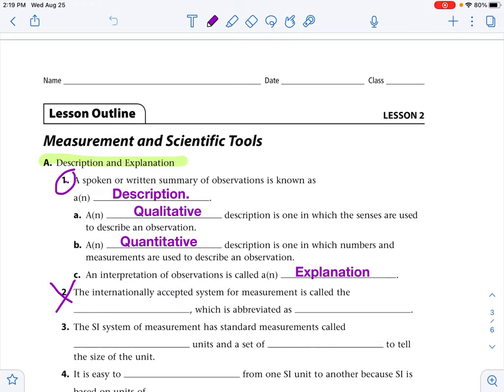A quantitative observation is one that is based, which is numbers, and measurements are used in an observation. So what is the temperature? What is the length? Is it 6 meters? Is it 630 degrees Celsius? Is it 50 grams? So something that you have measured. An interpretation of observations is called an explanation. So if you need to pause and get this filled in, please do so.